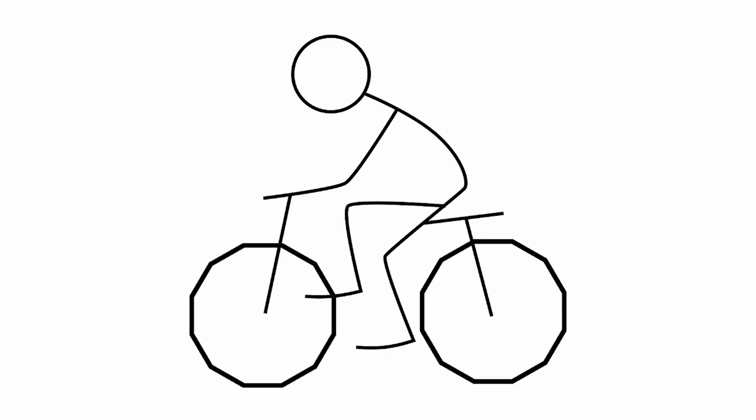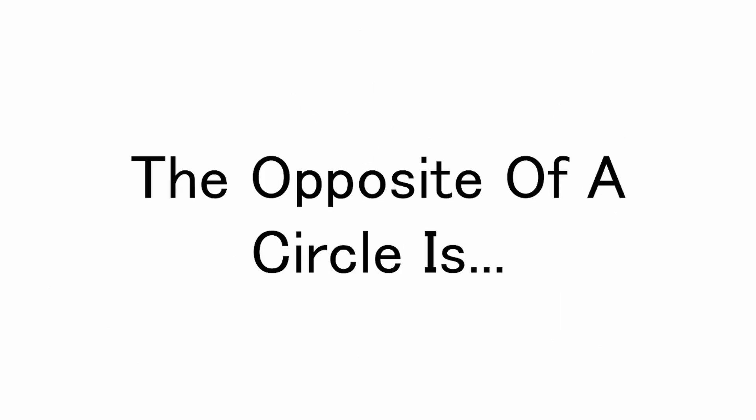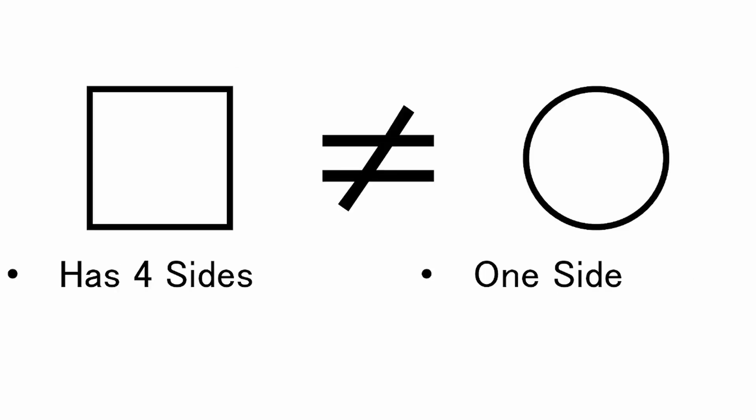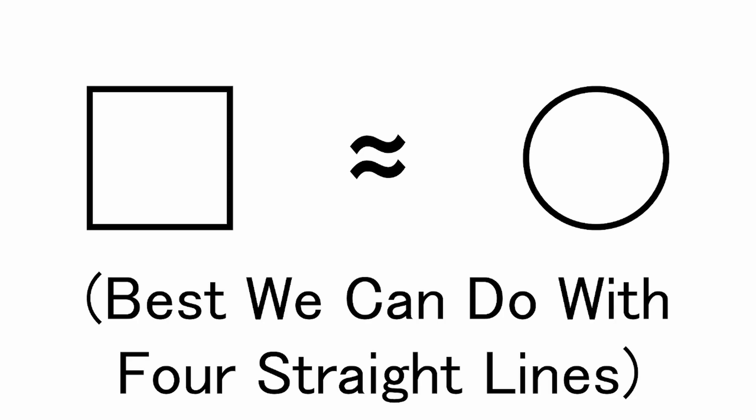Right, so let's start with the opposite of a circle, a square. A square is like a circle, except that it only has four sides and they all meet at right angles. So, you could think of a square as the best approximation of a circle with only four straight lines.